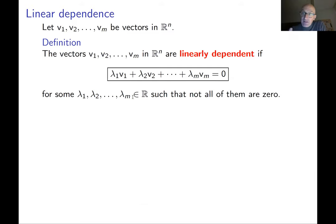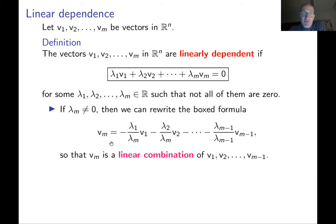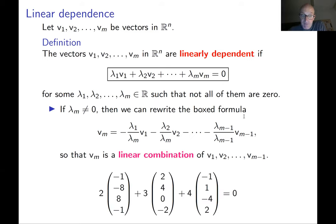This is an important condition. If we know for sure that, for example, lambda m is not zero, then we can divide by lambda m and express vm as a linear combination of the remaining vectors. However, from the beginning, we don't know which number among lambda 1, lambda 2, lambda m is not zero. So it can be lambda m, it can be lambda 1, it can be lambda 2. If you're sure that lambda m is not zero, then you can always express vm as a linear combination of the remaining vectors.